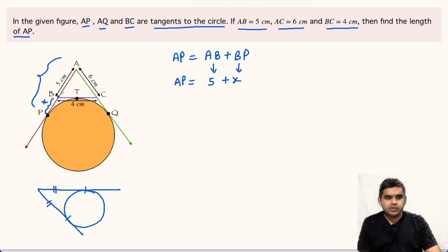If we see point B is the external point, BP and BT will be equal. This distance BT will also be X.